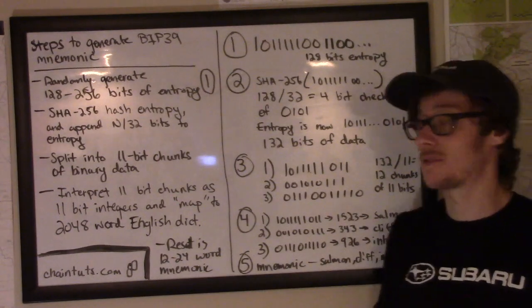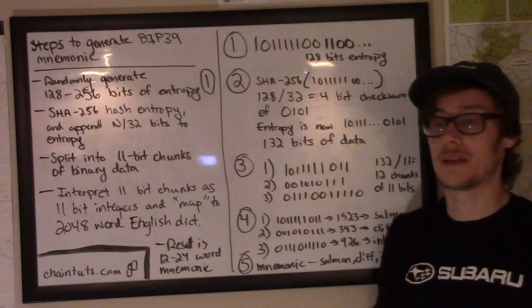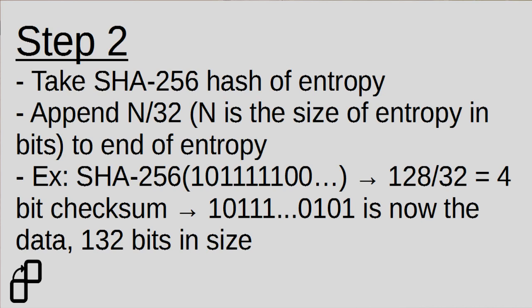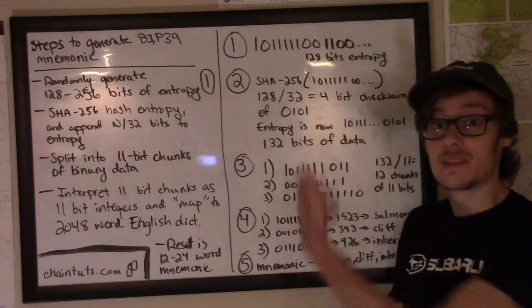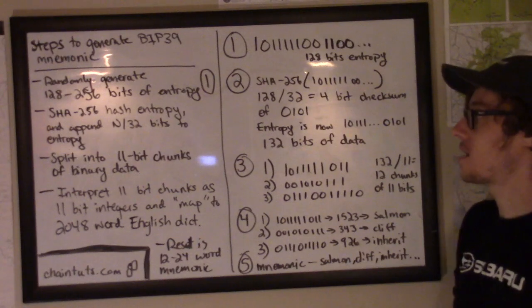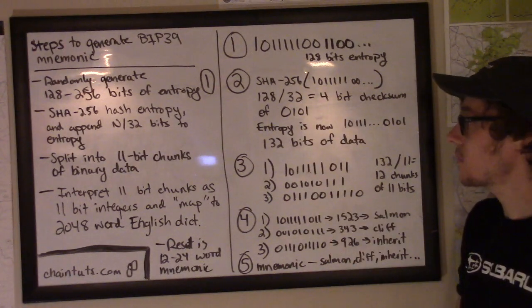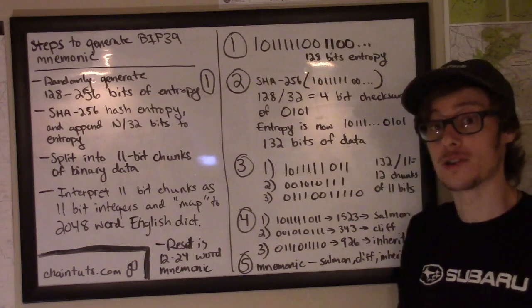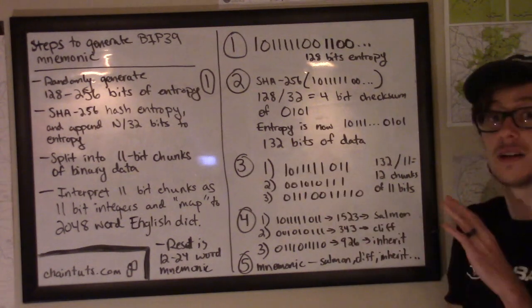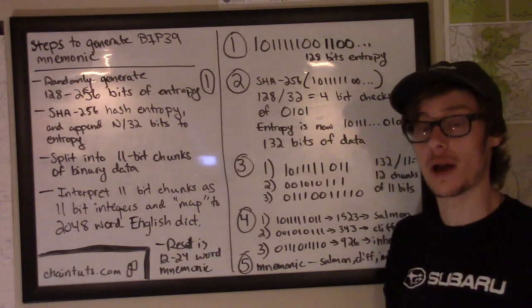So depending on the size of our entropy, we'll append a different amount of bits to the end. And this amount of bits is N, as the size of our entropy, divided by 32. So for example, with our 128 bits of entropy, we divide this by 32 and we get a 4-bit checksum. In the case of this example, and this is the same example that's available in the text article, our checksum is 0101. We append this to the very end of the 128 bits of entropy and we get 132 bits of total data that we're going to use to generate our mnemonic seed.